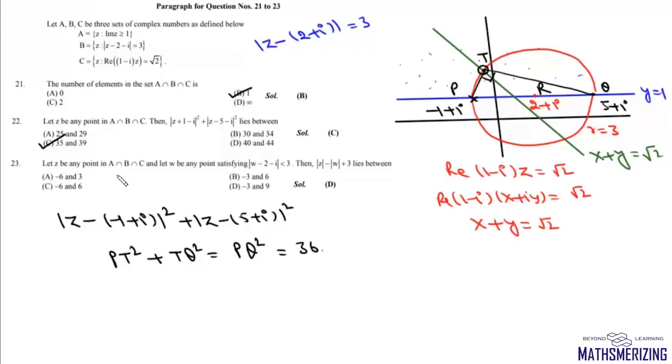Now the next question is let z be any point in A intersection B intersection C and let w be any point satisfying mod of w minus 2 minus iota is less than 3. Now w is set of all points lying inside this circle.